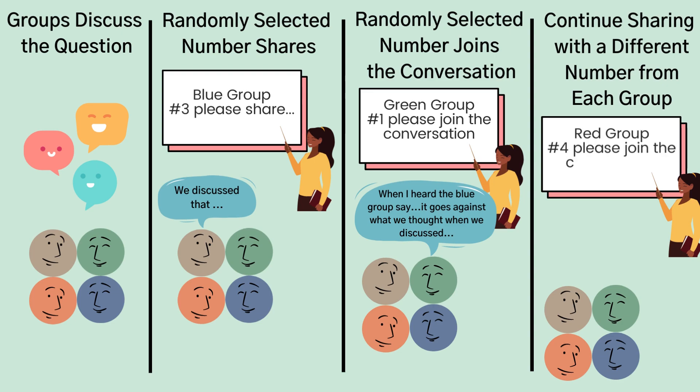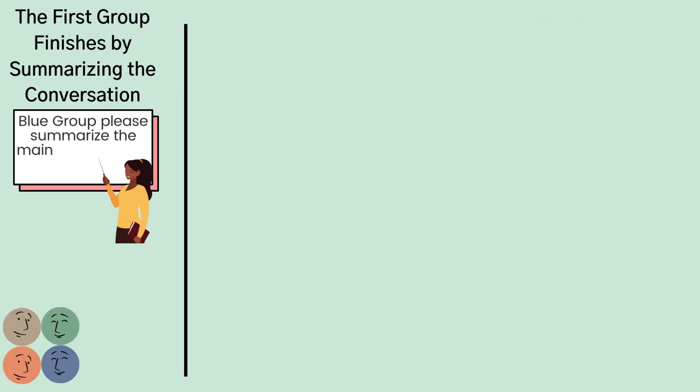Consider using a quick randomizer or set of cards numbered one to four. Once all groups have shared, the first group summarizes the entire conversation before the teacher poses the next question.